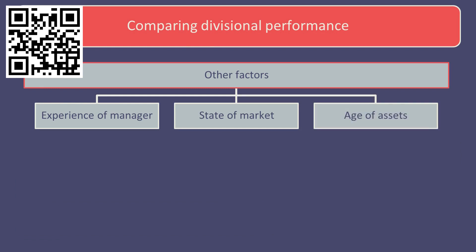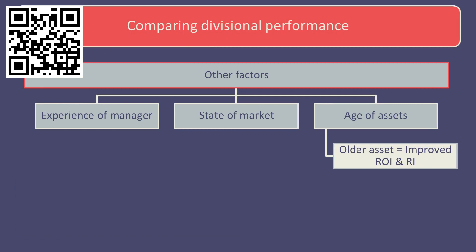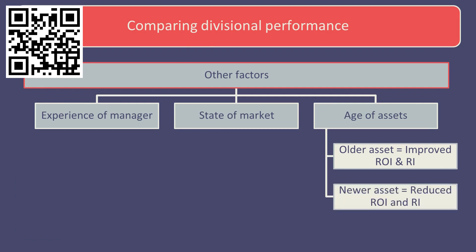What is the age profile of the assets within each division? Return on investment and residual income calculations will improve as assets get older, since the investment figure will reduce by the amount of depreciation each year. This may discourage managers from investing in newer, more efficient equipment, simply because in the short term it reduces the division's return on investment or residual income.